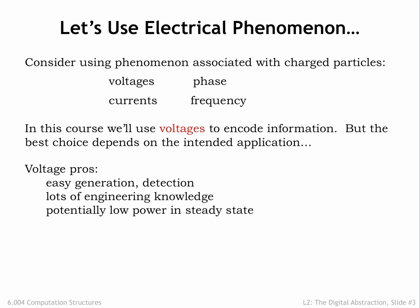For more than a century, we've been accumulating considerable engineering knowledge about voltages and currents. We now know how to build very small circuits to store, detect, and manipulate voltages, and we can make those circuits run on a very small amount of electrical power. In fact, we can design circuits that require close to zero power dissipation in a steady state if none of the encoded information is changing.